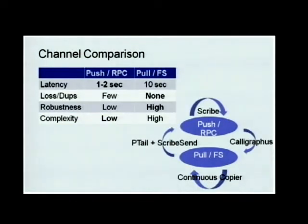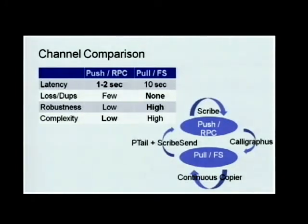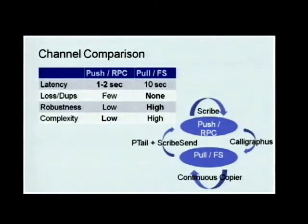Scribe gets data from RPC and sends it back to RPC. Calligraphers gets data from RPC and sends it to file system. Continuous Copier gets data from file system to file system. And PTail plus another tool gets a data stream and writes data to RPC — that's the last arc in this circle.